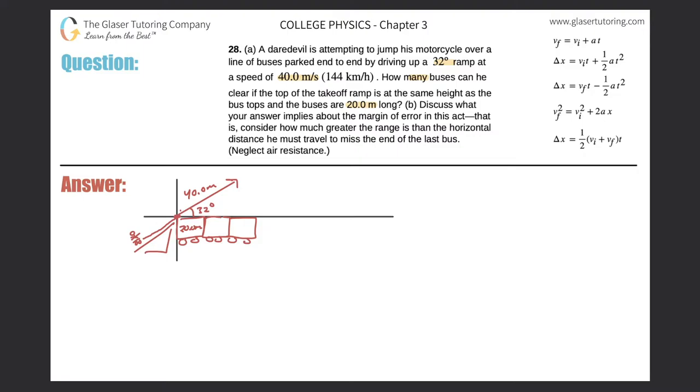So basically what they want us to find is we're trying to find how far can he go? Because we want to find how many buses he can clear. So what we're really interested in is we're really interested in this overall horizontal distance that I'm going to call x. This is really what we're interested in. Now the thing is, in order for me to calculate how far it goes horizontally, I got to know how long this thing is in the air. So in order to get to x, I first need to get to time. In order to get to time, I need to figure out stuff about the y dimension.